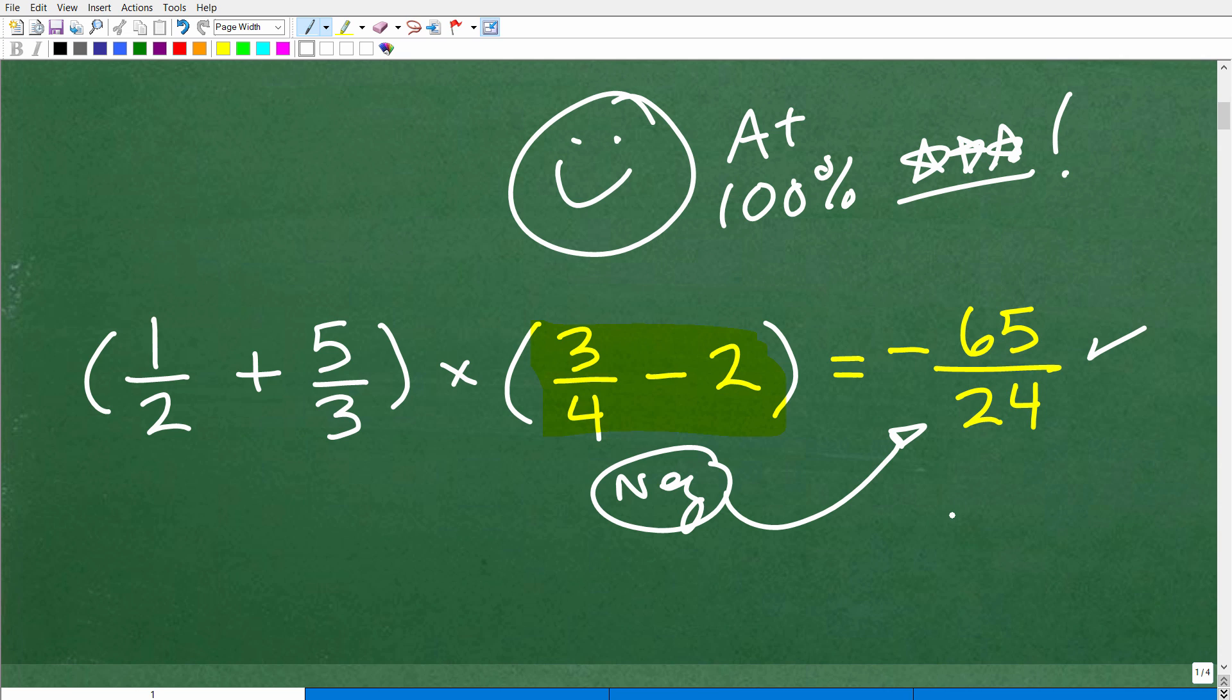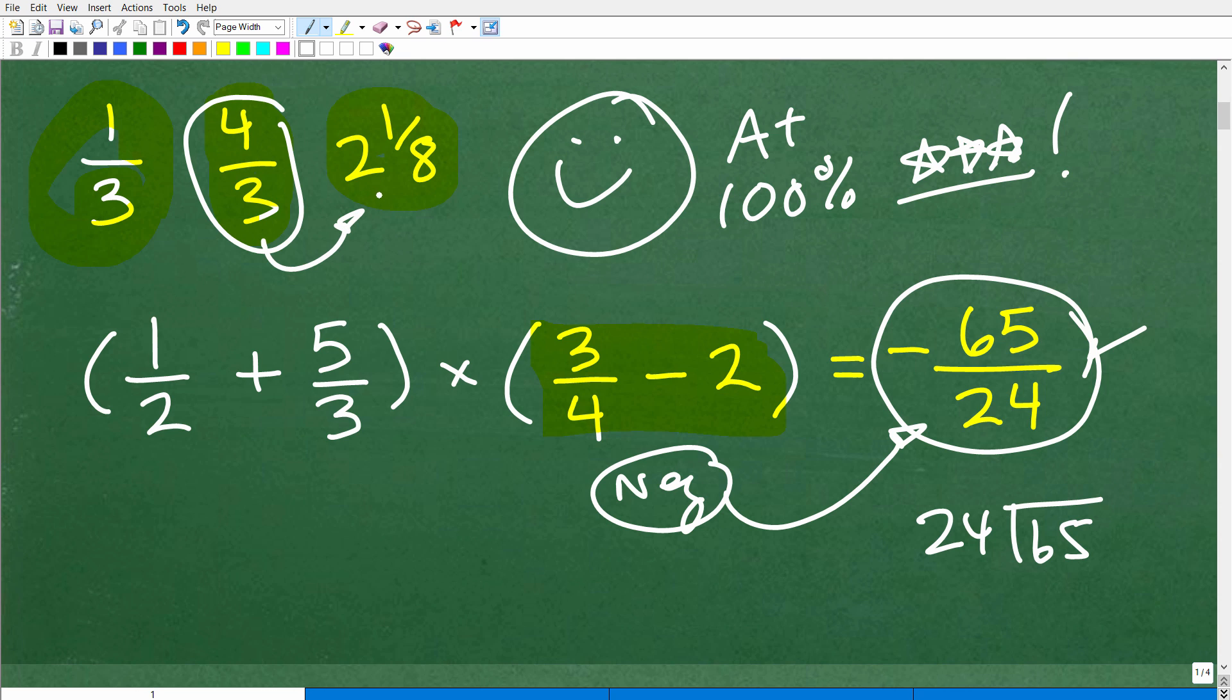If you decided to take this 65 and divide by 24, let's talk about this real quick. If we have a fraction one third or three fourths and two and one eighth, these are three types of common fractions. When the bottom number, the denominator, is bigger than the top number, we call this a proper fraction. When the numerator or top number is bigger than the denominator, like four thirds, this is called an improper fraction. And then you have something called a mixed number, like two and one eighth. You can convert improper fractions to mixed number fractions.